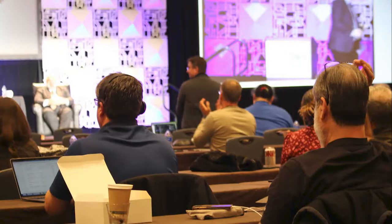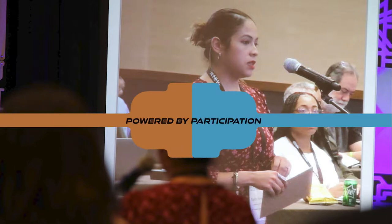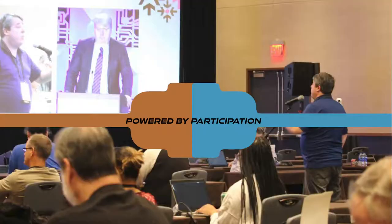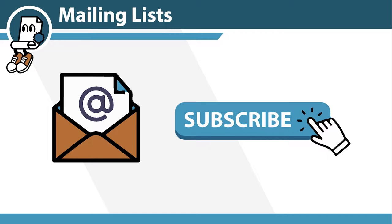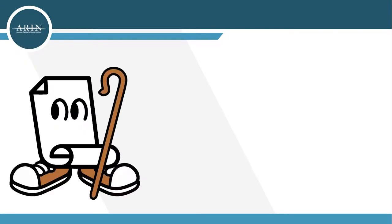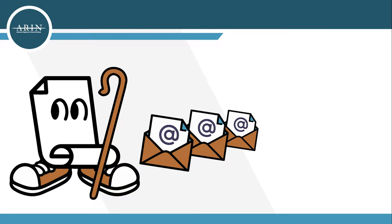ARIN thrives when our community is engaged — we are literally powered by participation. There are so many simple ways you can participate in the ARIN policy process. Our mailing lists: are you subscribed to the ARIN Public Policy Mailing List? This is the first opportunity to communicate your thoughts on draft policies. Advisory Council shepherds will reach out on the mailing list during several stages of the process, looking for feedback.